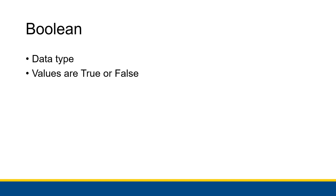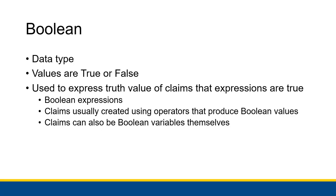Recall that I described a Boolean as a data type where values are either true or false. There are no other Boolean values — they are just true or false. The Boolean sort of existence is a universe where everything is either entirely true or entirely false. Where Boolean values come in handy is how we can use them to express the truth values of claims that certain expressions are true. We call those expressions a Boolean expression.